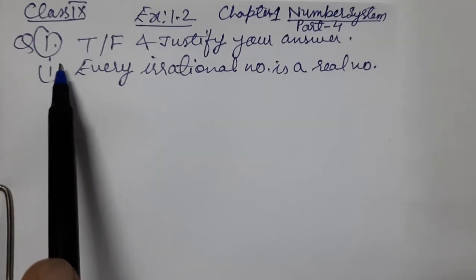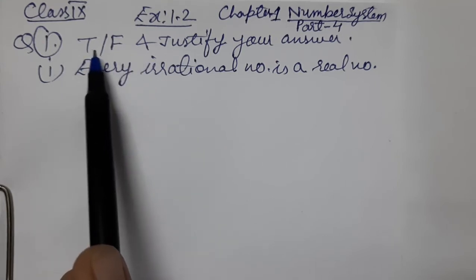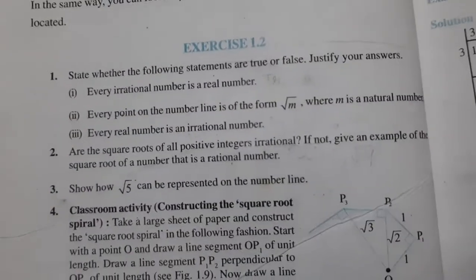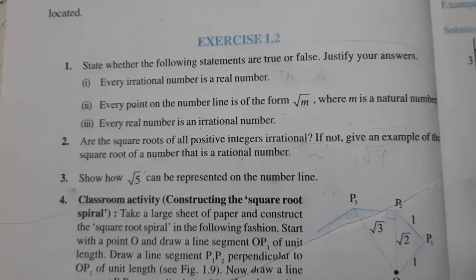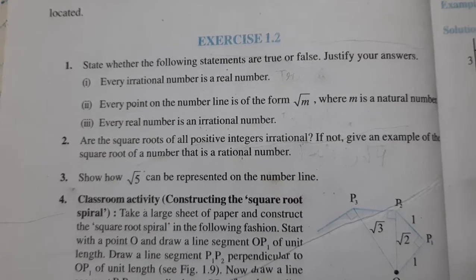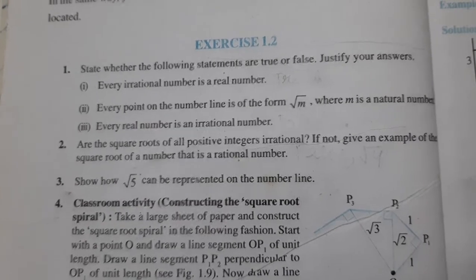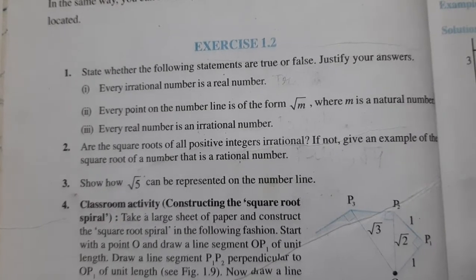These questions are not so easy as we are thinking. True, false, and justify your answer. See question number one from the NCERT book: state whether the following statements are true or false and justify your answer. Every irrational number is a real number.